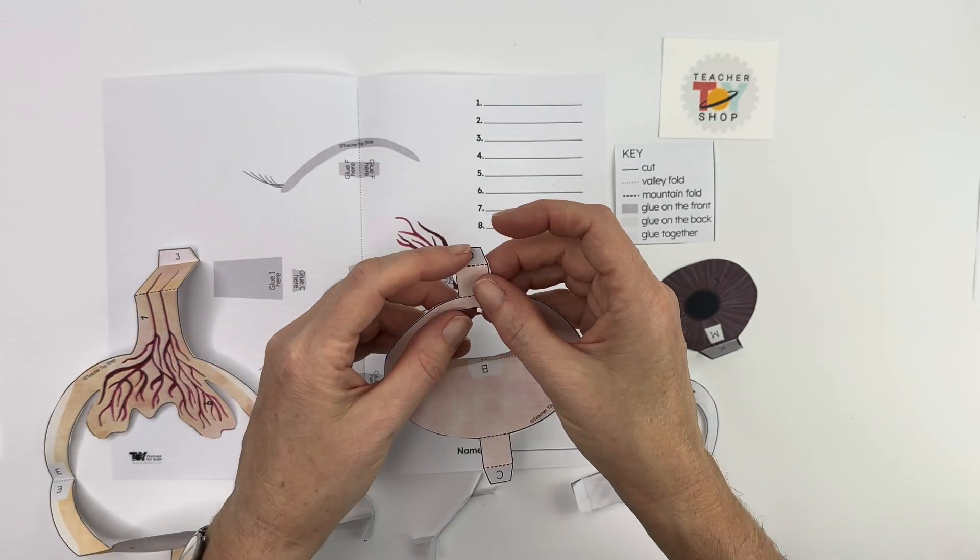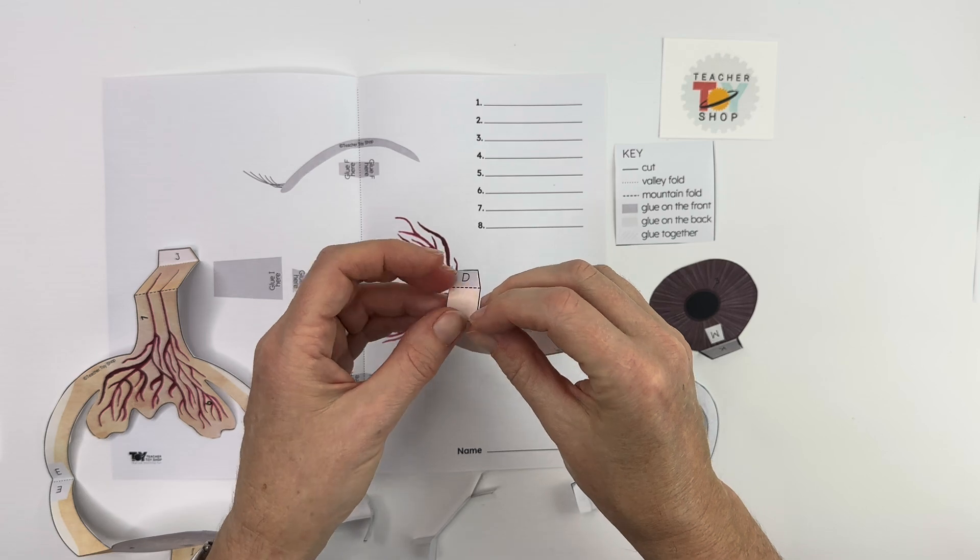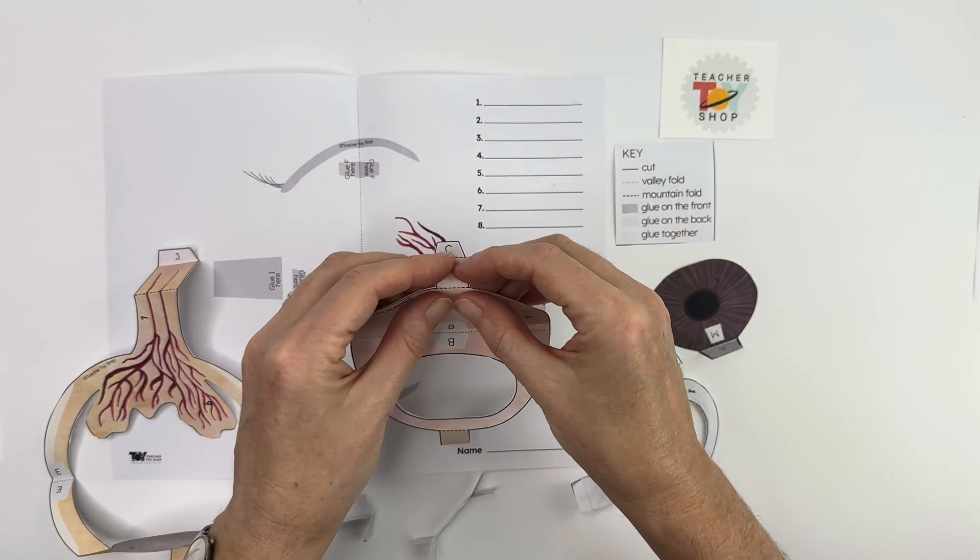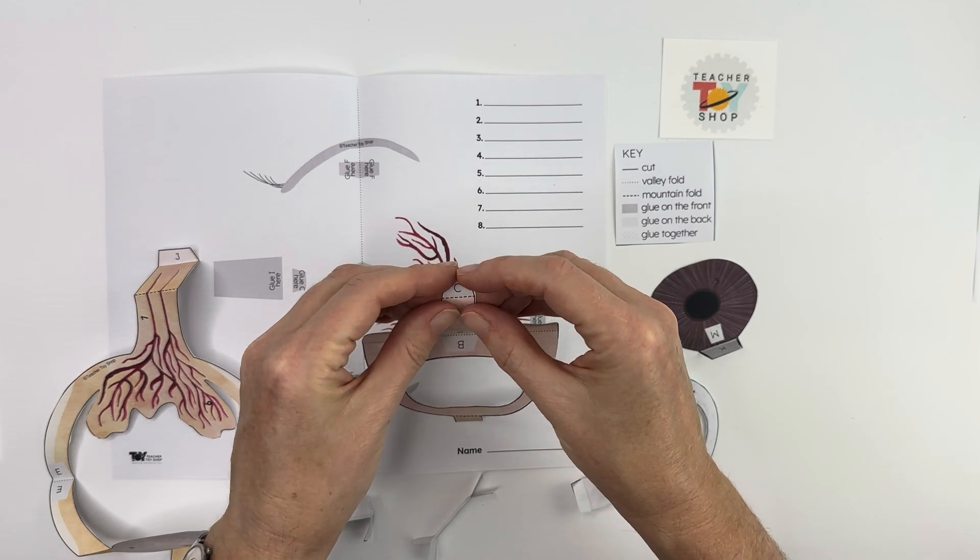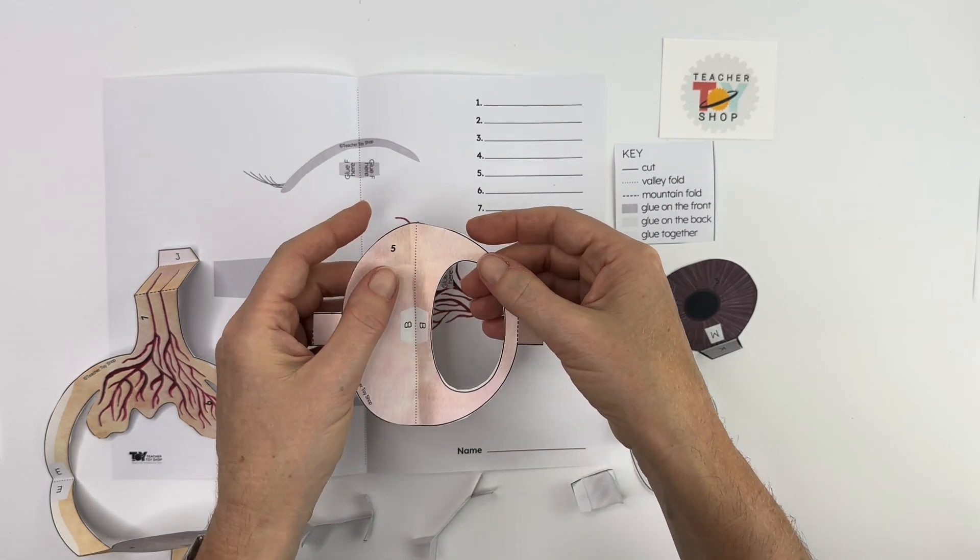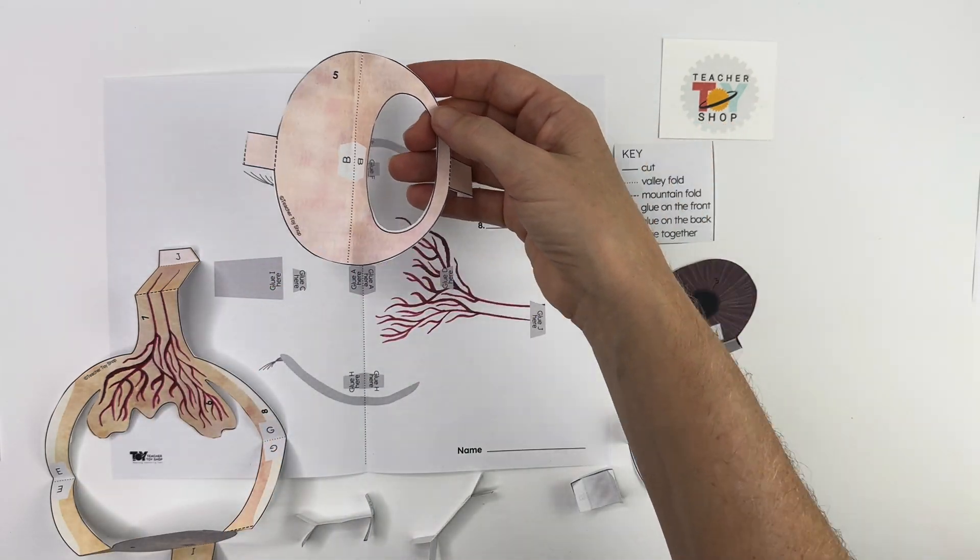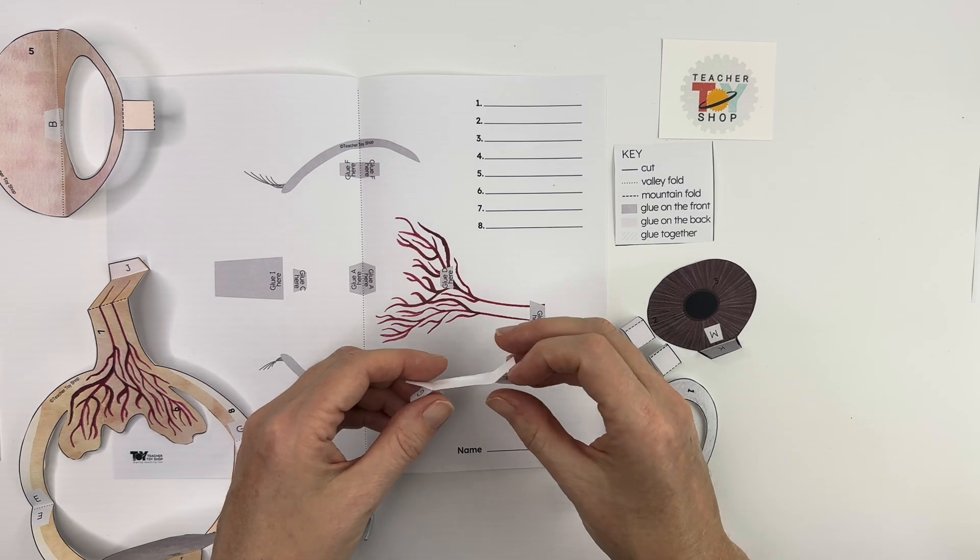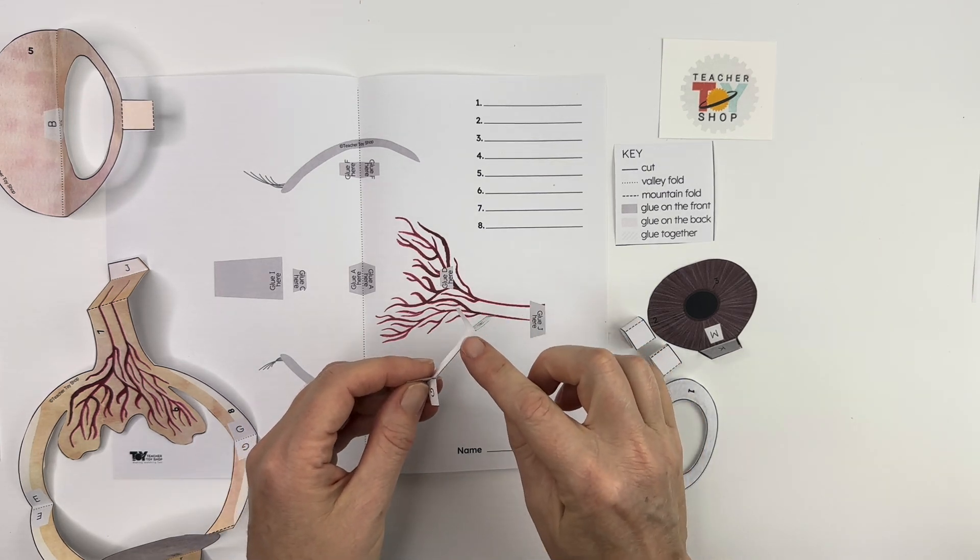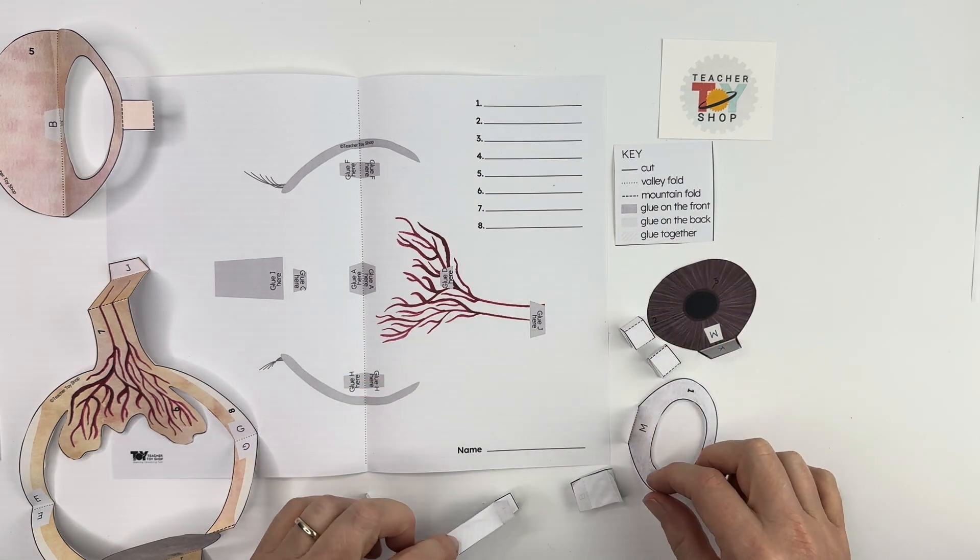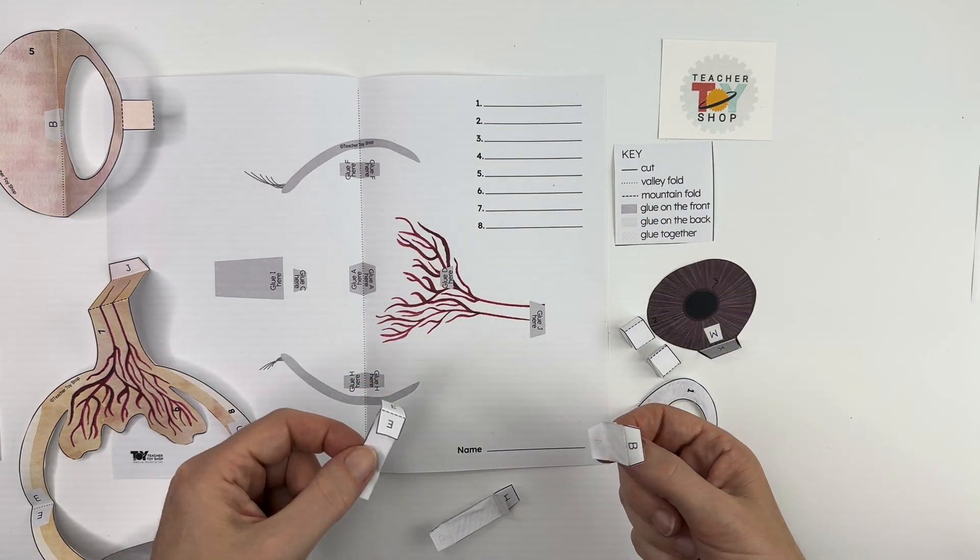Okay so that's the valley fold and then these are mountain folds just like this. Okay so that piece is done. I've done the others, these ones they have these mountain folds but you have to glue in the center. You just follow the directions where it says glue together or glue on the back which I have done.